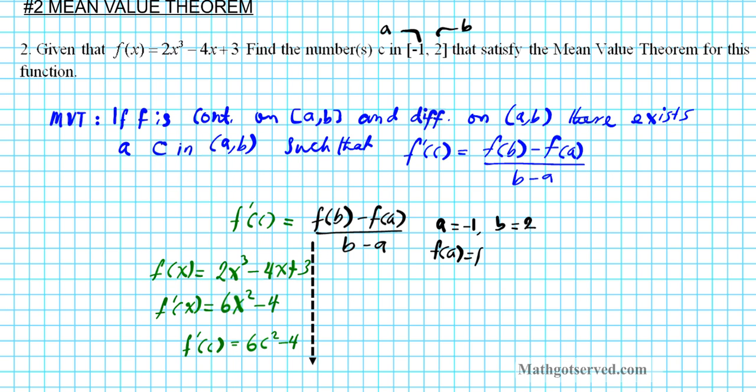f of A is f of negative 1, so we're going to plug negative 1 into the original function, not the derivative, so be careful with that. So we have 2 times negative 1 to the third minus 4 times negative 1 plus 3. If you compute that using your order of operations, you end up with 11 as a value of f of A. f of B, we're going to evaluate the function, this original function at x equals 2. So we're going to have 2 times 2 to the third minus 4 times 2 plus 3. Compute that, you end up with 5.